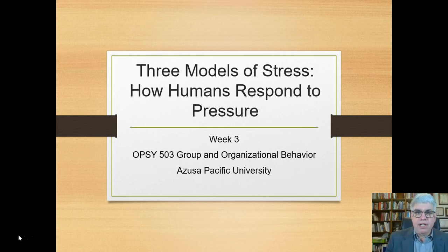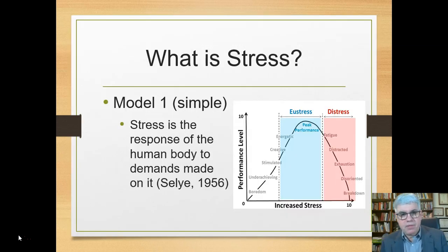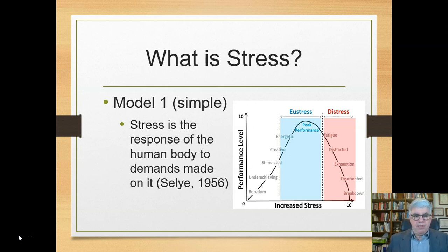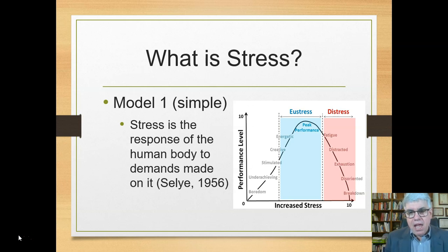Let's look at different ways of explaining what stress is. The first model is the simplest, first presented by Selye in 1956. He basically said stress is the response of the human body to demands made on it — the response to whatever stressors are telling us that we need to act in a certain way. There are other, more sophisticated ways of understanding stress that we'll see.